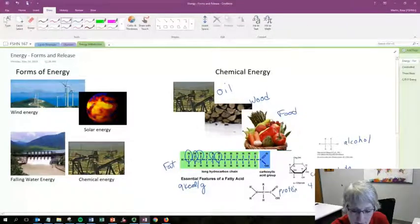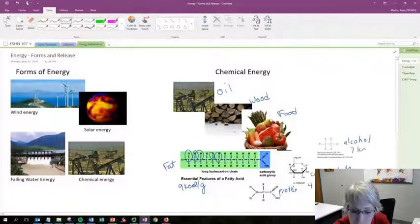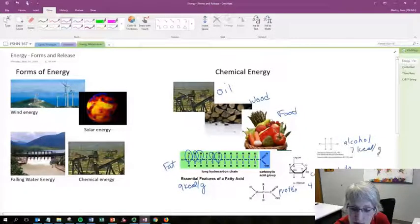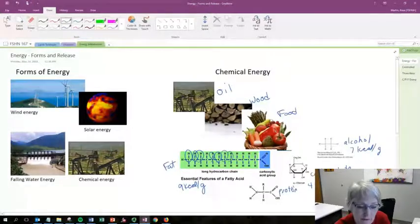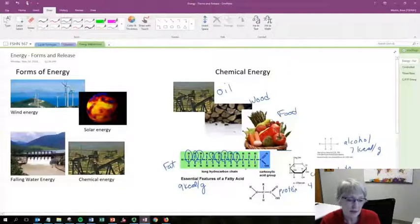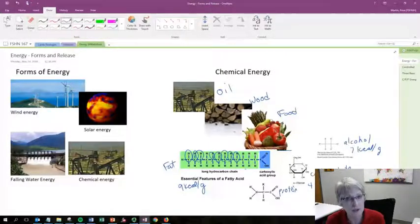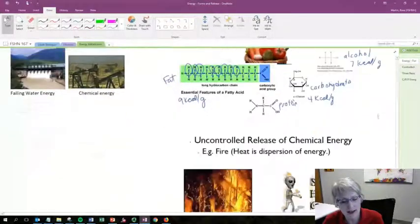Carbohydrate and protein have four calories per gram, and alcohol has seven calories per gram. The reason why they have fewer is because they have fewer carbon-hydrogen bonds. If we're going to take that energy that's in that carbon-hydrogen bond, we're going to use it to do the energy pathways of the body.